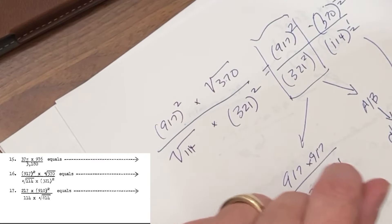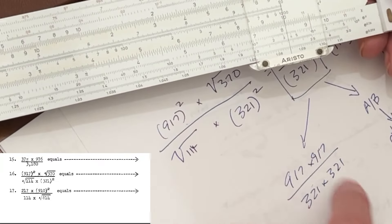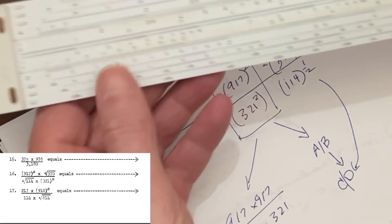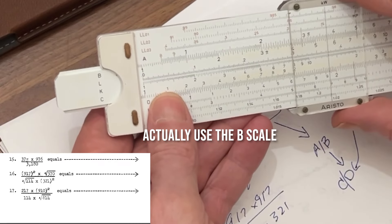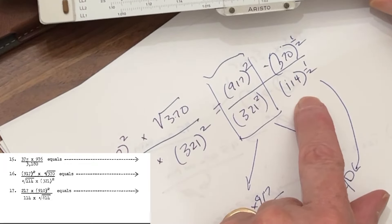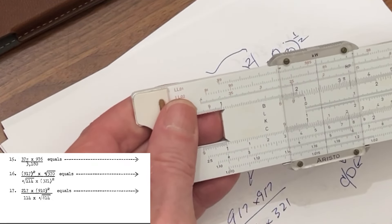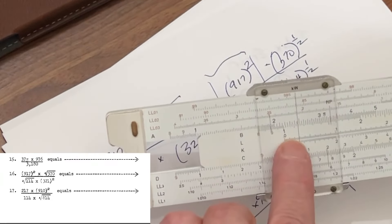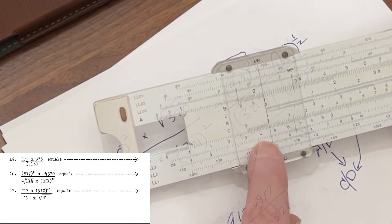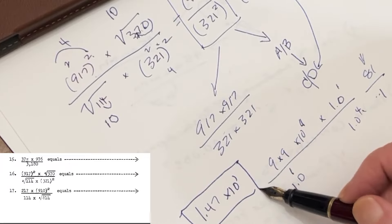Flipping back over, we're just over 8 on the A scale, and we've transferred that value to the D scale. Since our index is already here, the next step is multiplication. We need to multiply by the square root of 370, which is on the left side of the A scale — read straight down and there's our answer. Next, we divide by the square root of 114, using 114 on the B scale. Reading down, we get 1.47. That's the correct answer, and we're going to have 1.47 times 10 to the 1.